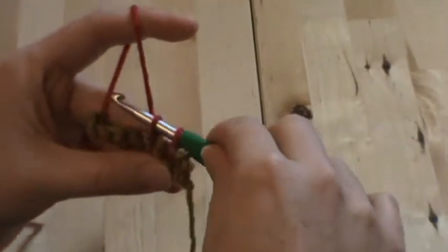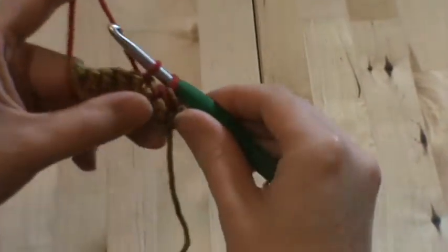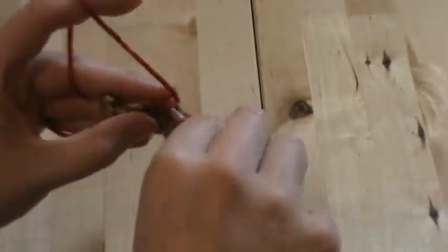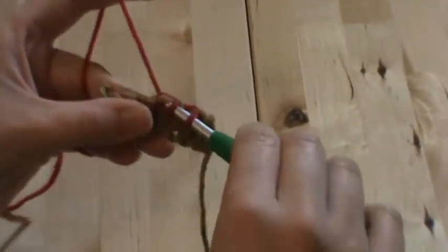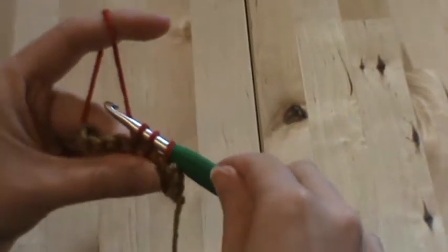Pull up a loop. Pull up a loop. You have two on your hook. You're going to go through the next, the second hole. Pull up a loop. And you have three on your hook.